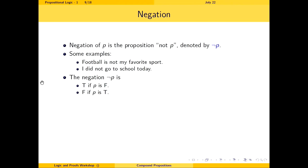The negation of P is the proposition 'not P,' denoted ¬P. Examples: 'Football is not my favorite sport,' 'I did not go to school today.' Negation is defined as: ¬P is true if P is false, and ¬P is false if P is true. Since there is one simple proposition, there are only two truth assignments and two rows in its truth table.